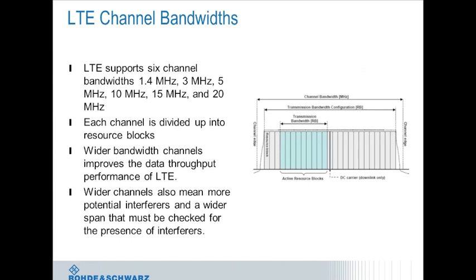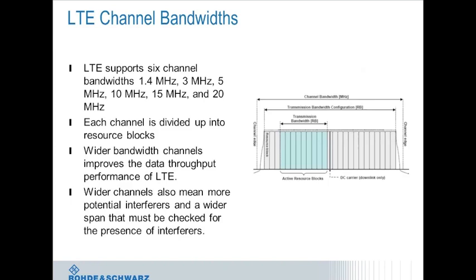Another way LTE increases throughput is through wider channel bandwidths — LTE supports different bandwidths, but the trend is toward 10 or 20 MHz channels. This means a wider frequency range must be checked for interferers; instead of searching a 1.5 MHz CDMA channel, you now search a 10 or 20 MHz wide channel. This places much stricter requirements on instruments used to find interferers, requiring fast scan speeds and a high probability of intercept to avoid missing intermittent or low-level signals.